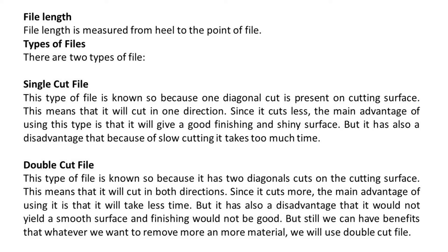A double cut file has two diagonal cuts on the cutting surface, which means that it will cut in both directions. Since it cuts more, the main advantage is that it will take less time. However, a disadvantage is that it would not yield a smooth surface and finishing would not be good. Still, whenever we want to remove more and more material, we will use a double cut file.